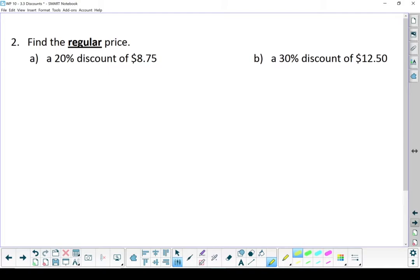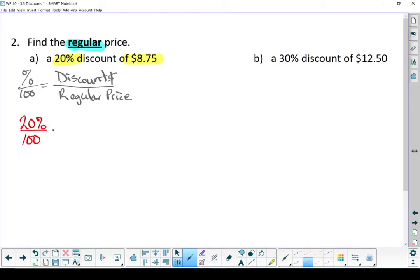Question two asks us to find the regular price. In this case, we know what percent our discount is and how many dollars our discount is. There's our percent, there's our discount dollars. What we don't know is the regular price. Let's write down our formula. Putting in what we know: I know my percent of discount, I know my discount is $8.75. What I don't know is that regular price, and that's that piece right there.